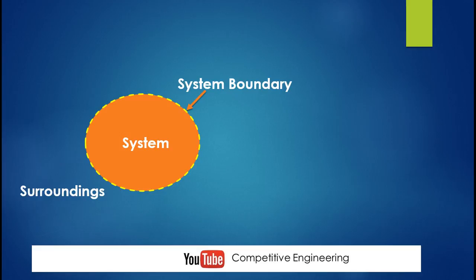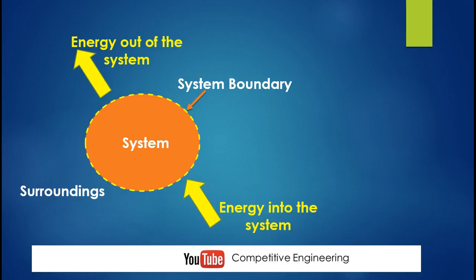Now I am going to explain the concept of energy interaction with system and surroundings. Like mass interaction, there are two possibilities: energy can move into the system from surroundings, or energy can leave the system to the surroundings. Energy moving from surroundings to the system is called energy into the system, and energy moving from the system to surroundings is called energy out of the system.